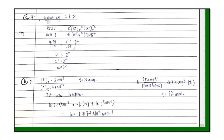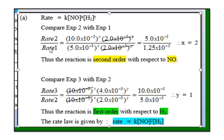Another student correctly compared experiments one and two, substituted the values, and found 4 = 2^m, so m = 2. However, they did not write a conclusion and did not proceed to find the order with respect to chlorine — so the answer is incomplete. The complete method requires finding the order for both nitrogen monoxide and chlorine before writing the final rate law.